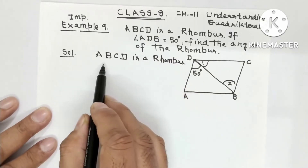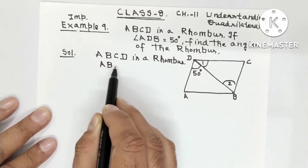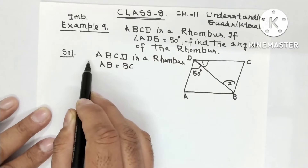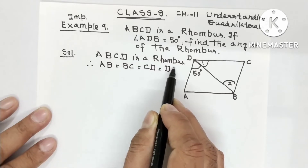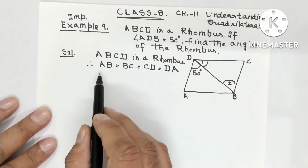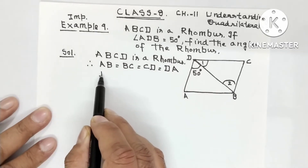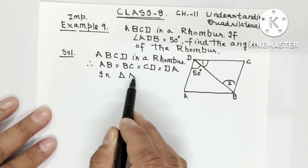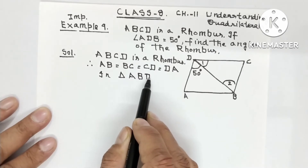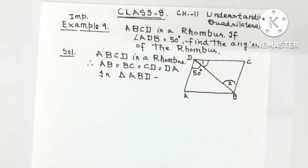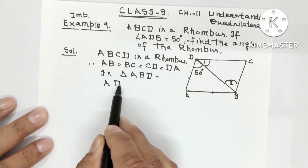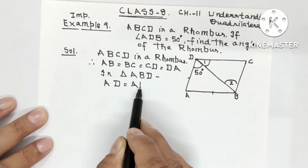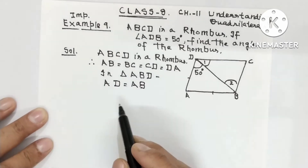If ABCD is a rhombus, then as you know, all sides of a rhombus are equal: AB = BC = CD = DA. All the sides of the rhombus are equal. Now take triangle ABD. The diagonal is dividing the rhombus into two triangles. Take triangle ABD — in this triangle, these two sides will be equal.